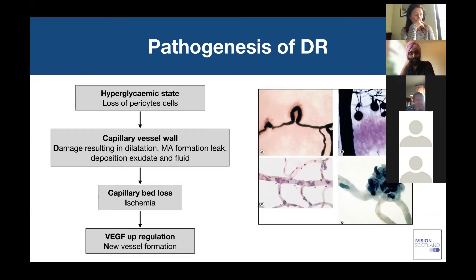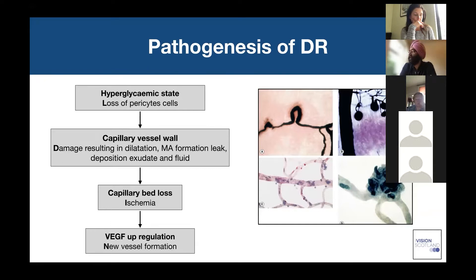Understanding pathology is important because it helps you understand why patients present with particular clinical presentations. In diabetes, the hyperglycemic state — the high sugar concentration circulating in the blood — is actually very toxic with a high oxidative state, causing cell damage. In particular, as sugar circulates through blood vessels it causes loss of pericytes. Pericytes are cells which surround blood vessels and help maintain the endothelium, so they're important in maintaining capillary vessel wall structure.